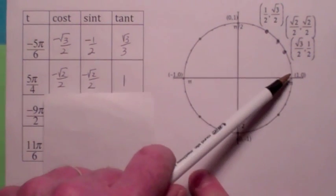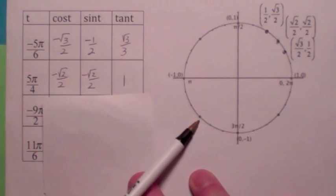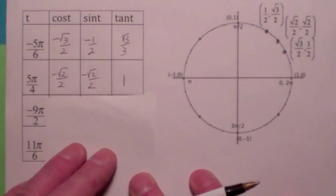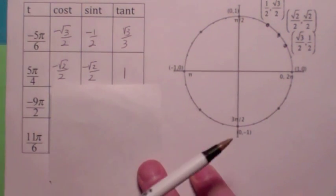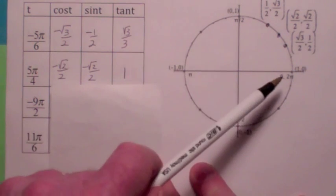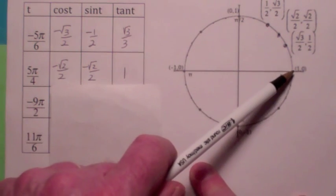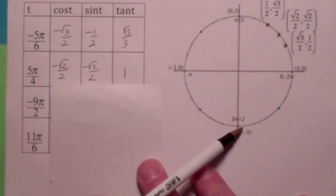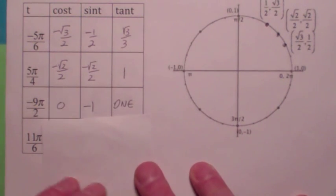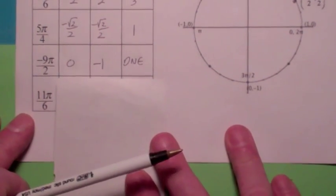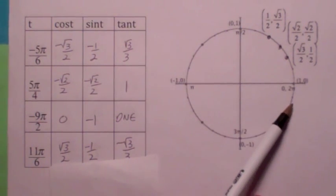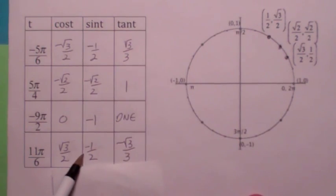For t = 5π/4 (positive), that puts us down in the third quadrant, so the tangent is positive 1. For t = -9π/2, think of it as -8π/2, which is -4π — you go around clockwise twice — and then another -π/2, ending up at (0, -1). Notice the tangent is undefined there. Last one: t = 11π/6 puts you right here in the fourth quadrant, so x = √3/2, y = -1/2, and the tangent is -√3/3.